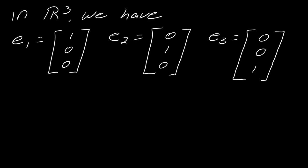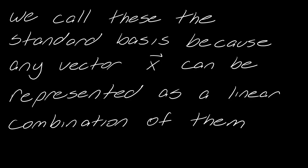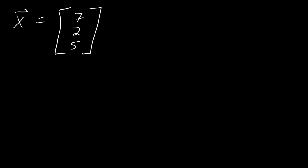And so like in R3, we would have, so here's my E1, so I have 1, 0, 0. My E2 would be 0, 1, 0, and my E3 would be 0, 0, 1. So we call these the standard basis because any vector can be represented as a linear combination of them. So just to show you a little basic example of this. So if I had this vector now, 7, 2, 5. So I could rewrite this using my standard basis vectors. So this would be 7 times E1, 2 times E2, and 5 times E3. So that's why we call them the standard basis vectors.